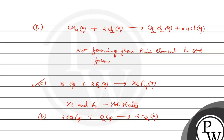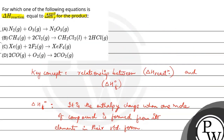Based on our analysis, we can clearly say that only in reaction C — Xe gas plus 2F₂ gas gives XeF₄ gas — does delta H reaction equal delta H°f of the product. So Option C is the correct answer for this question. Hope you all have understood. All the best!